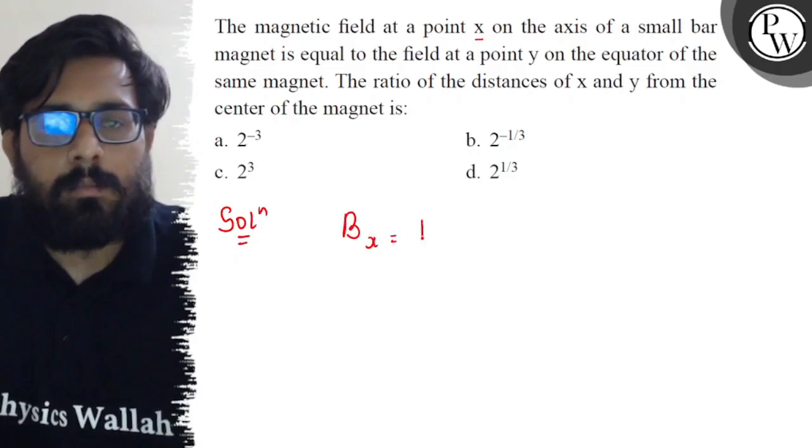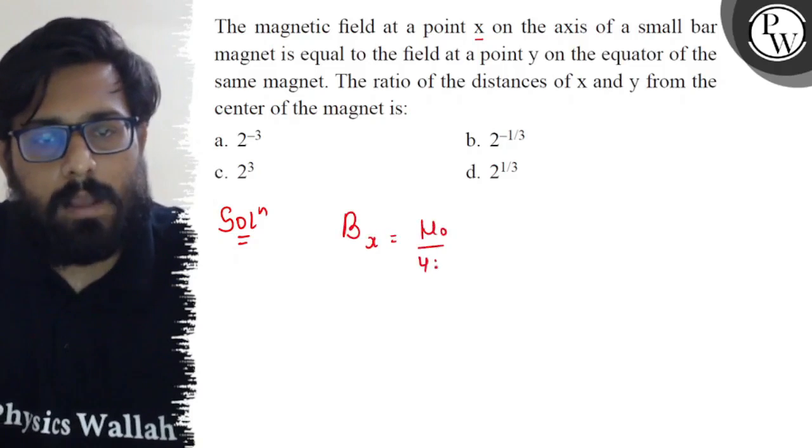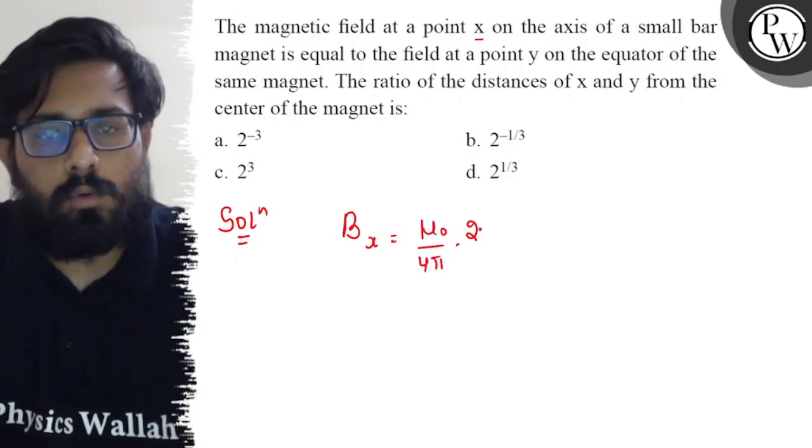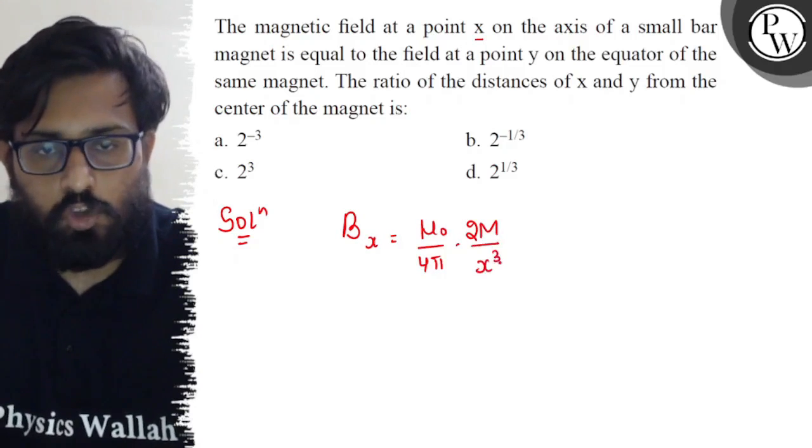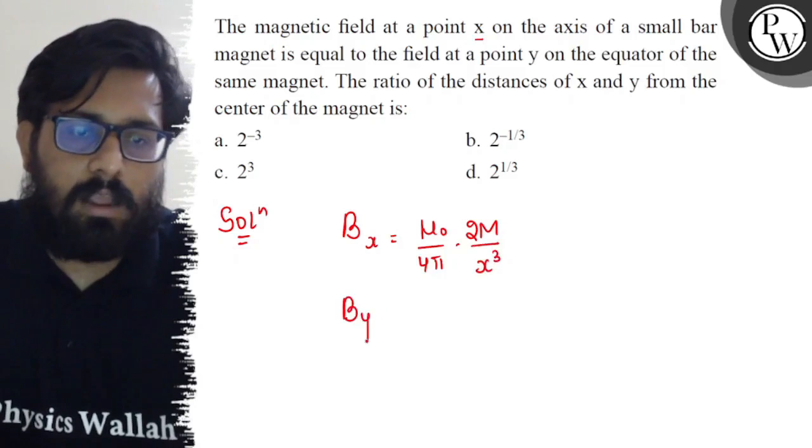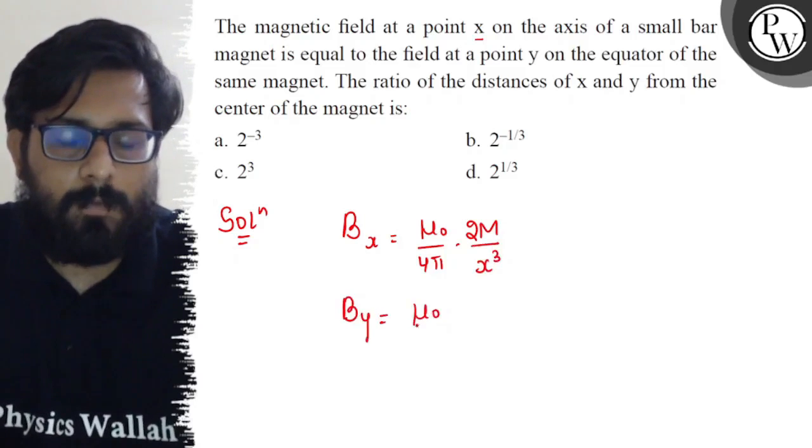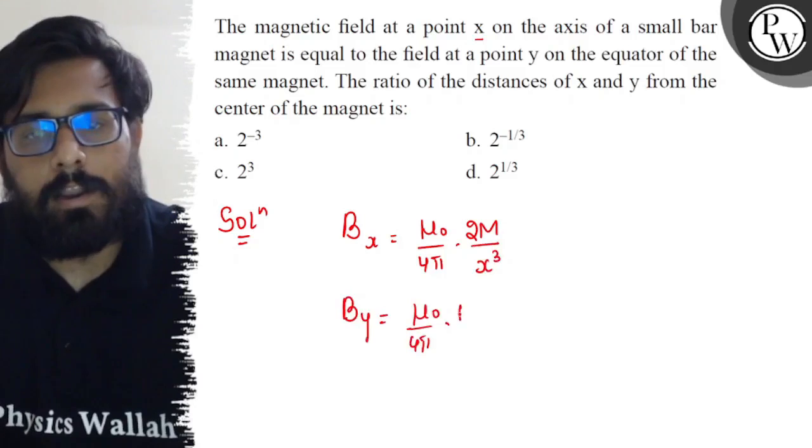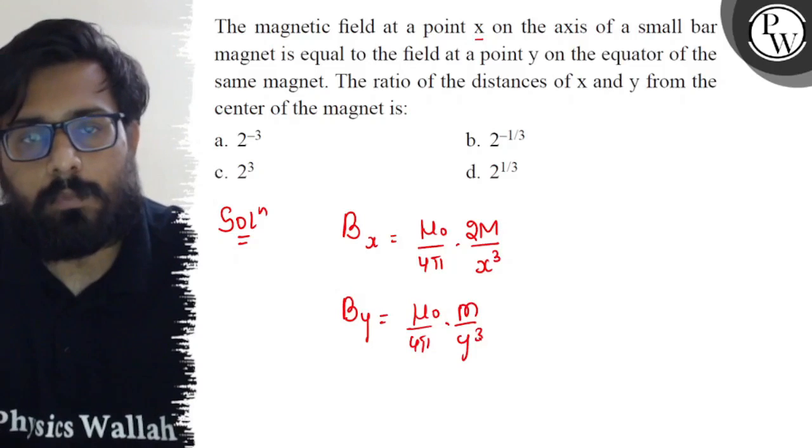it's μ₀/4π × 2m/x³. We talk about along the equatorial position, it comes out to μ₀/4π × m/y³. The ratio of the distances x and y from the center of the magnet we have to find out.